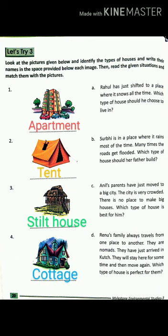Now we will read the situations and match them with the correct picture. Part A: Rahul has just shifted to a place where it snows all the time — which type of house should he choose? The answer is cottage. So Part A is matched with number four. Part B: Surbhi is in a place where it rains most of the time and roads get flooded — which type of house should her father build? The answer is a stilt house, because the wooden poles protect the house from flooding. So Part B is matched with number three.